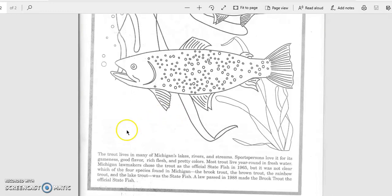This text says, the trout lives in many of Michigan's lakes, rivers, and streams. Sportspersons love it for its gameness, good flavor, rich flesh, and pretty colors. Most trout live year-round in fresh water.